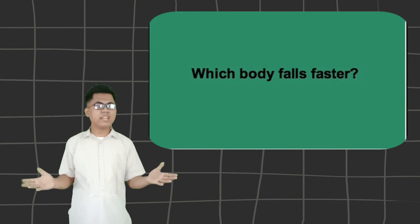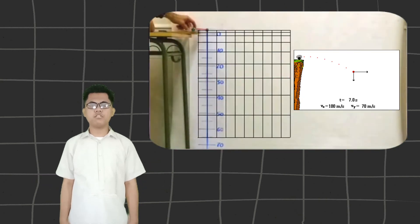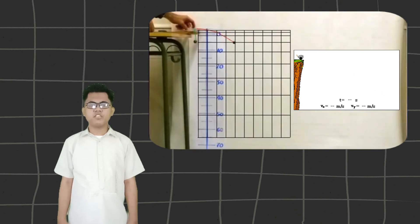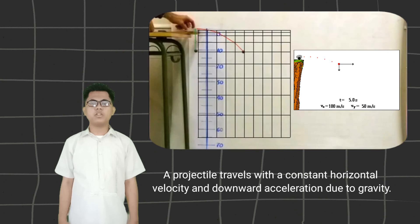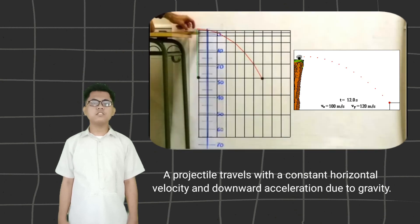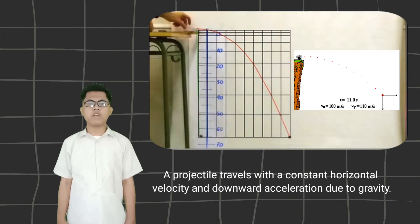Why? Again, as we discussed, the horizontal motion and vertical motion are independent to each other. While the projectile is moving with a horizontal constant velocity, it is also moving with a downward acceleration due to gravity.